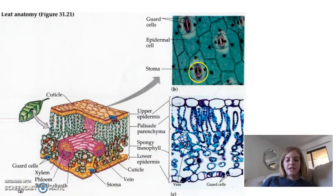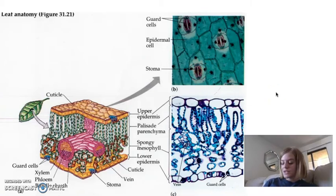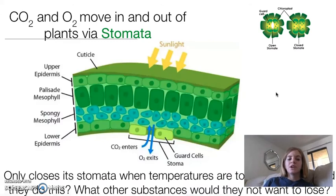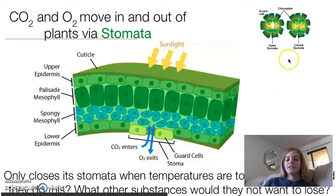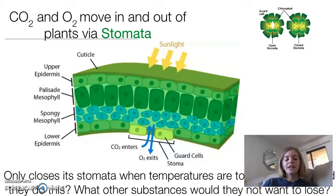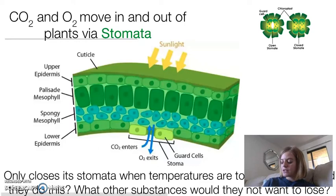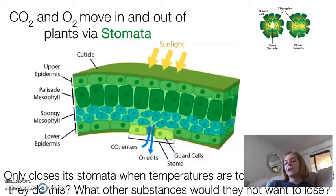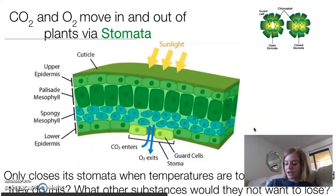The stomata is able to open and close depending on where the plant is and what time of day it is. Carbon dioxide and oxygen move in and out of plants via the stomata, and they can open and close. Typically plants only close the stomata when water temperatures are too high, because water vapor can also exit through the stomata. When temperatures are high, they're trying to conserve water, so they don't want to have their stomata open all day. But this causes somewhat of a problem because it's more difficult for carbon dioxide to enter.